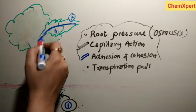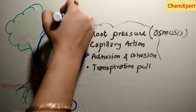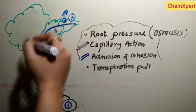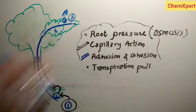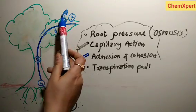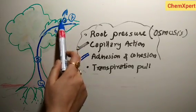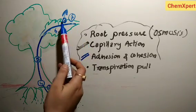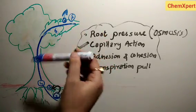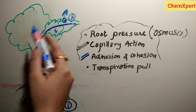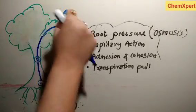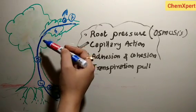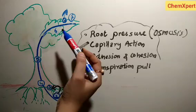As water rises to the leaves, transpiration occurs — the loss of water to the atmosphere through stomata. Transpiration through stomata creates a suction pump, called the transpiration pull, which creates a vacuum and pushes water upwards. This transpiration pull sucks the water column from the xylem tube, allowing water to rise to a greater height even in the tallest plant.